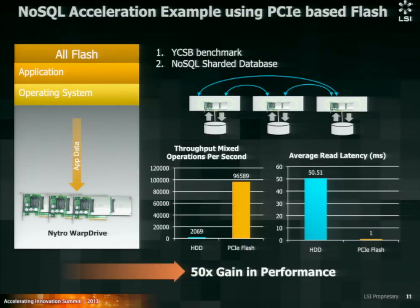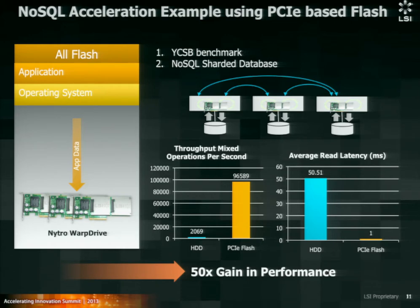We did a benchmark using NoSQL. We used the Yahoo benchmark YCSB over a three-node clustered system, and we did a baseline using hard disks. We replaced the hard disk with the PCIe Flash device and got a 50x performance gain. With hard disk, we got 2,000 operations per second. When we switched over to PCIe Flash, we got almost 100,000 operations per second. The read latency average using hard disk was 50 milliseconds; on the PCIe Flash, it was an average of one millisecond.